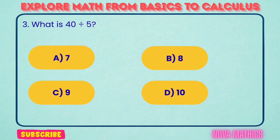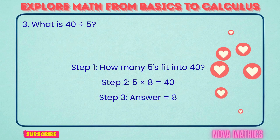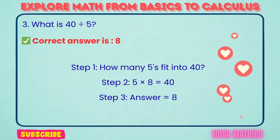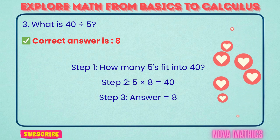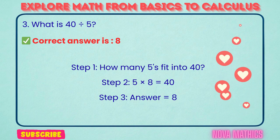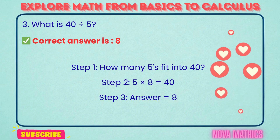3. What is 40 divided by 5? Correct answer is 8. 40 divided by 5 equals 8. We find this because 5 times 8 is 40.